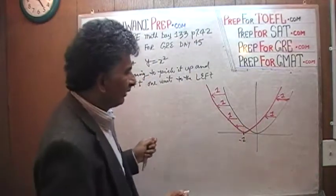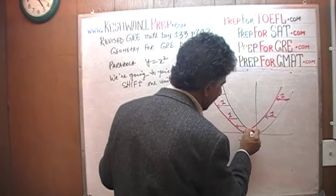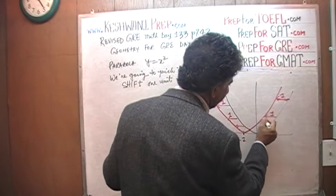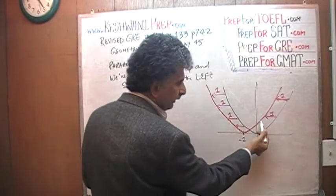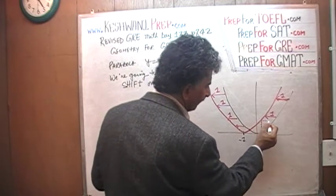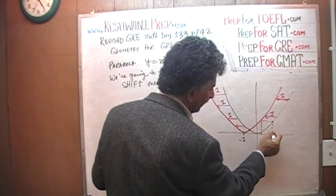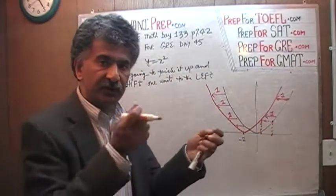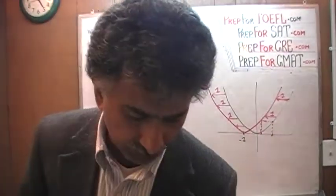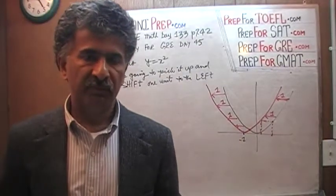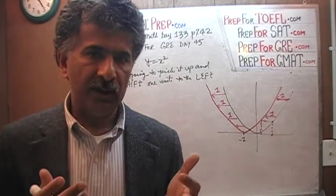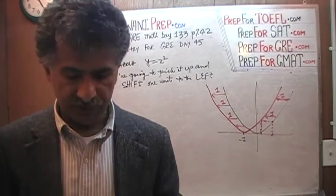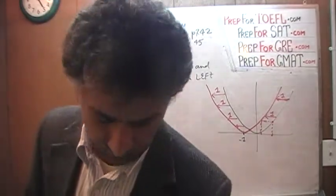In other words, whatever the value of y was here, now the same value of y takes place one unit earlier. Whatever value of y is here at the given value of x, now the same value takes place one unit earlier because it has been shifted to the left one unit. Whatever values of y that took place before for a given value of x, the exact same values of y will take place now, but one unit earlier. The relationship itself between x and y does not change.